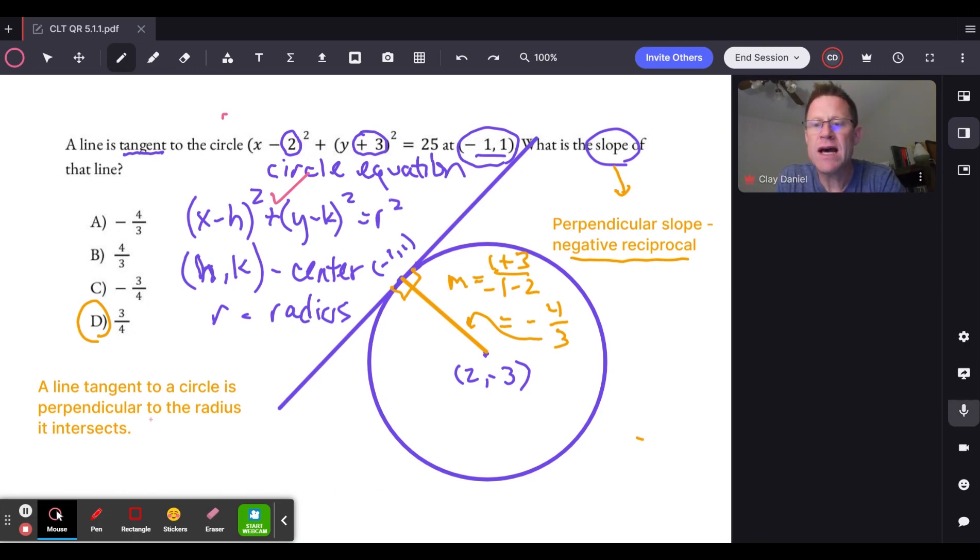Did I know that a line tangent to a circle is perpendicular to the radius that intersects? That relationship. On a more basic level, you want to make sure you know how to do rise over run, change in y over change in x, and the fact that a perpendicular slope is a negative reciprocal.